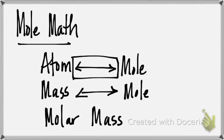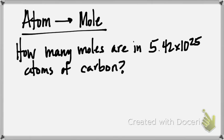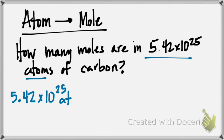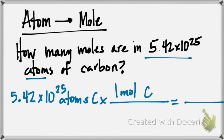Then you have mass to mole, mole to mass, and then something called molar mass, which is embedded in almost every single thing you do in chemistry. In the first type of question, an atom to mole question, the example is how many moles are in 5.42 times 10 to the 25th atoms of carbon. You start with what's given, so you have 5.42 times 10 to the 25th atoms of carbon, and you're going to use unit analysis to change this into moles of carbon.